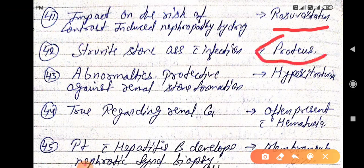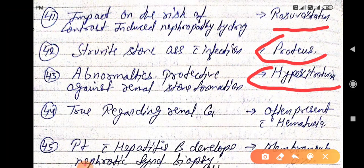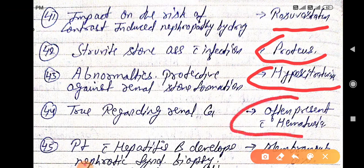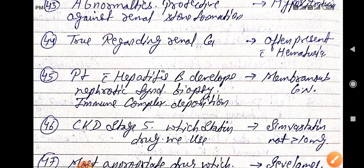Abnormality is protective against renal stone formation, that is hypercitraturia. True regarding renal cancer. Often present with hematuria. Renal CA, it's renal carcinoma, often presents with hematuria.